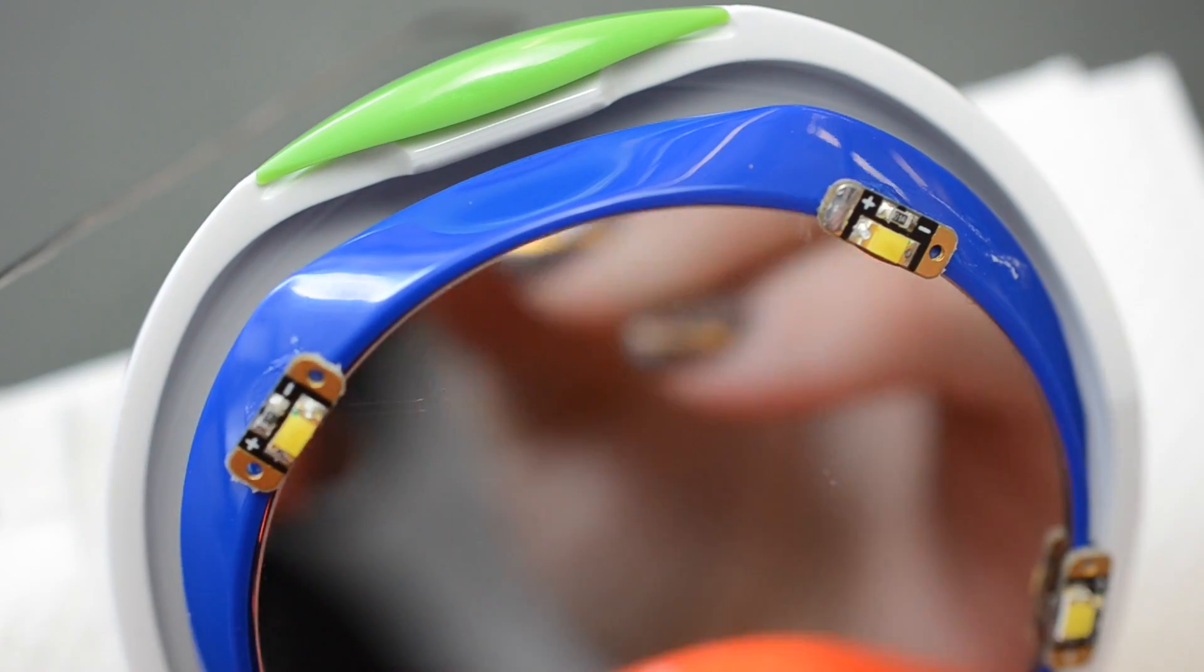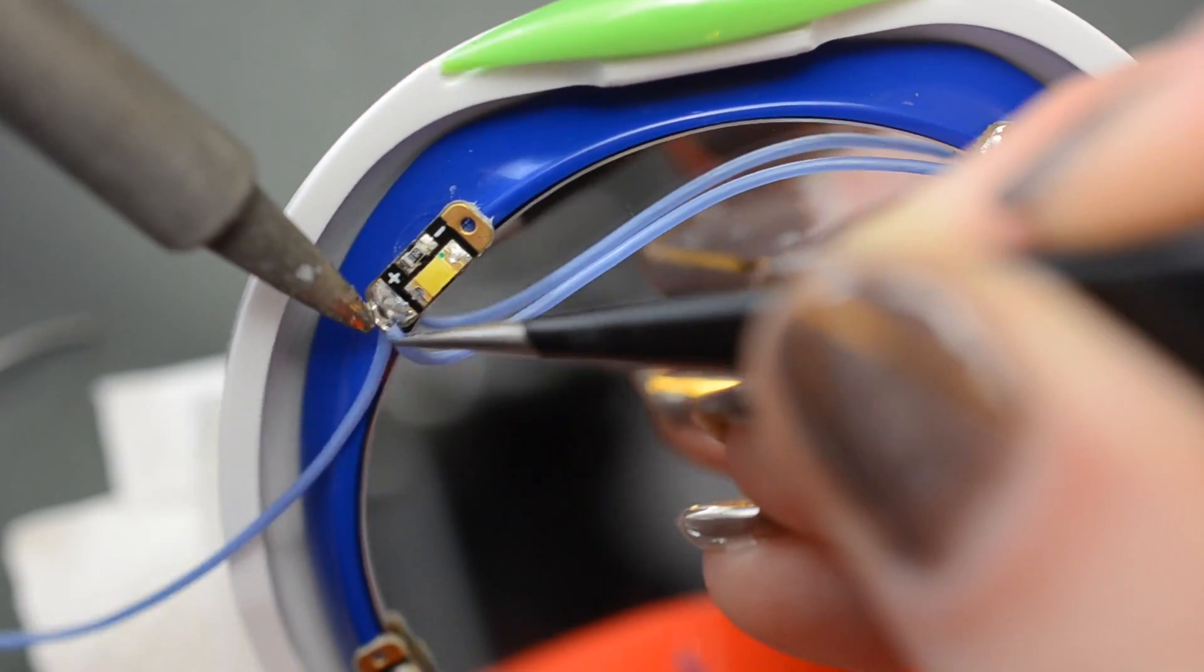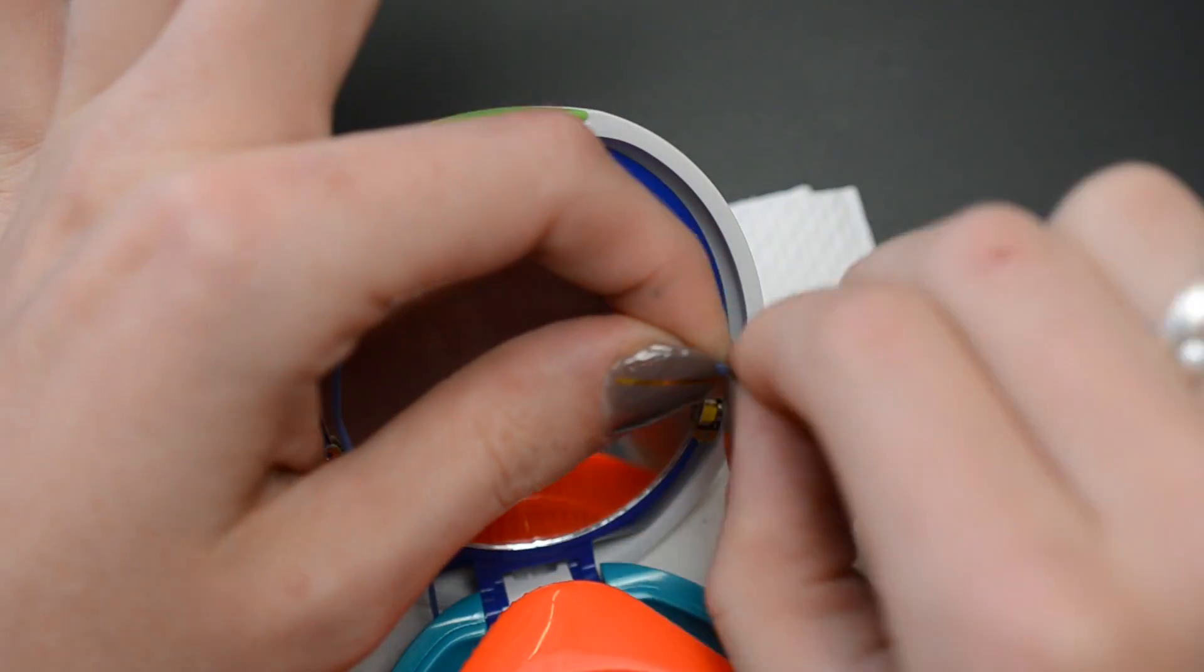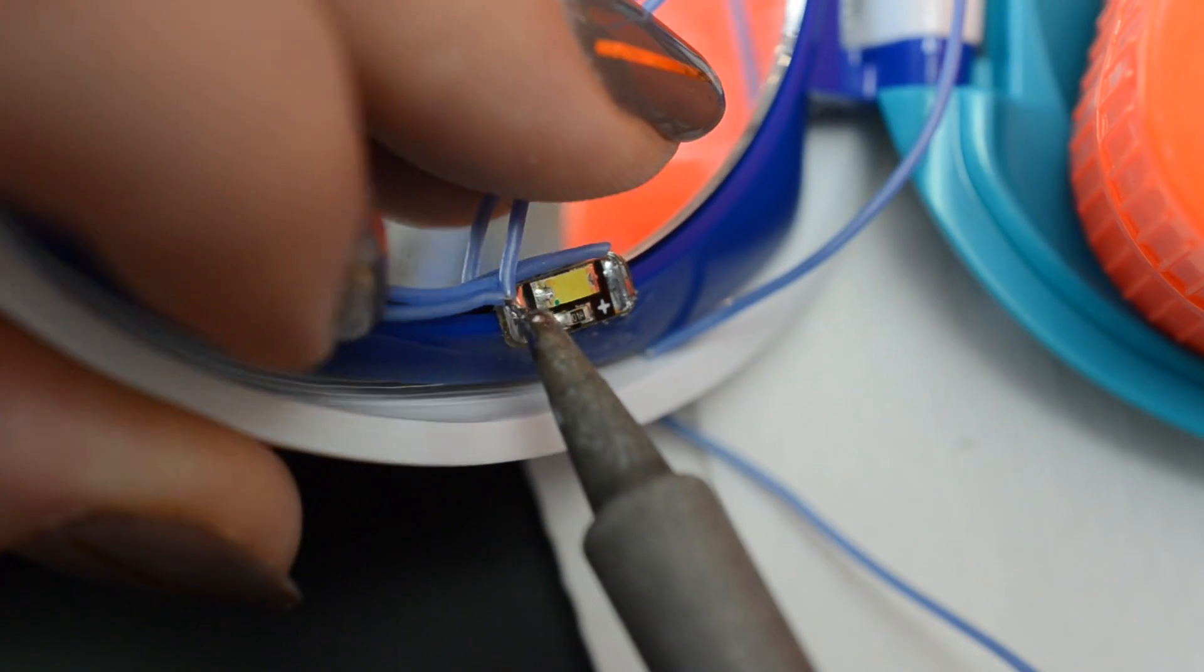All the LEDs are wired in parallel, which means that all of the positive terminals are connected to each other, and likewise all the negative ground terminals are connected to each other. It's easiest to twist and tin two wire ends together before reheating to join with the tinned solder pad on the sequins.